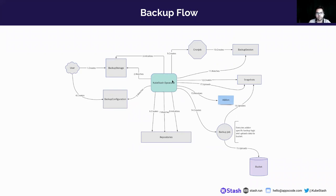The KubeStash operator also watches for the repository object. When it finds one, it initializes it in the backend — meaning it uploads the repository metadata to the backend. When these things are ready, KubeStash creates a cron job for each session — for multiple sessions, there will be multiple cron jobs. The cron job periodically creates the backup session according to the schedule, and the KubeStash operator watches for the backup session.